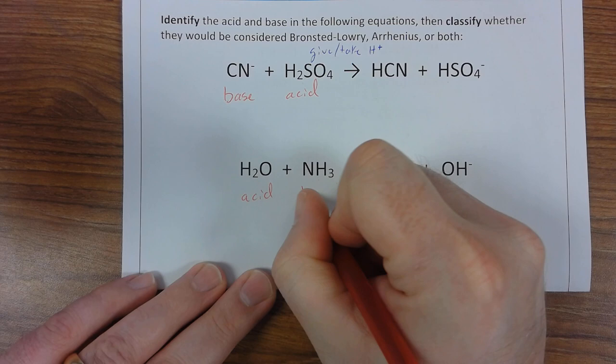The NH3 came in with three but left with four. He's accepting them. That makes him the base.